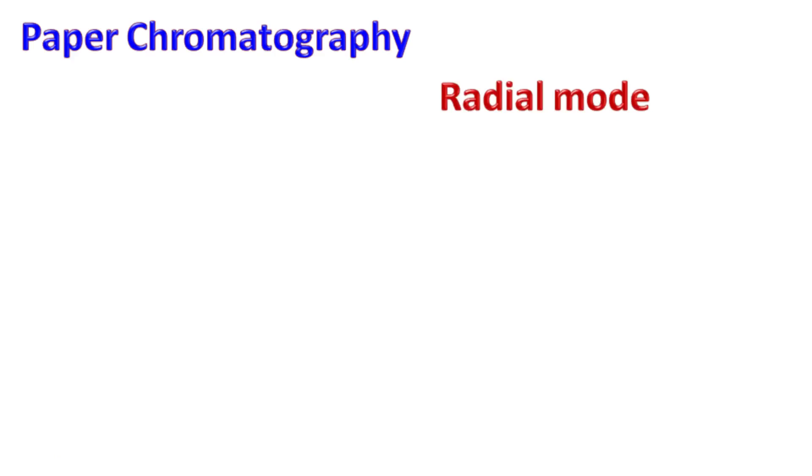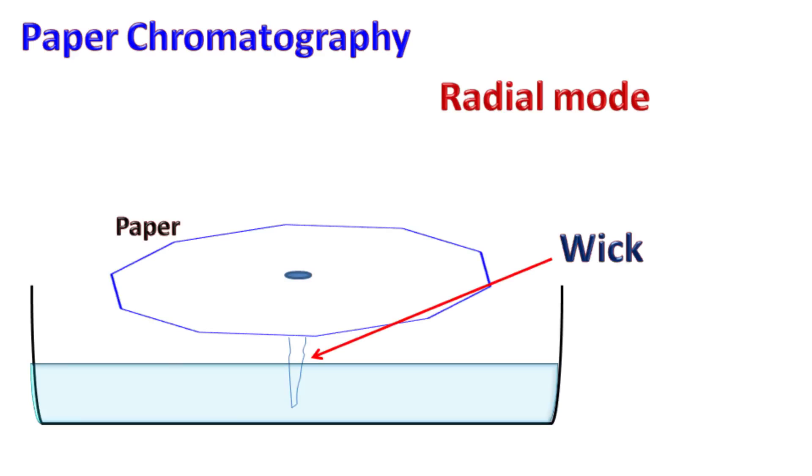In radial paper chromatography, a wick is attached at the center of a circular paper. This wick remains submerged in the mobile phase and absorbs the solvent by capillary action. As the mobile phase moves throughout the paper in a radial fashion, the separation of the sample occurs radially.